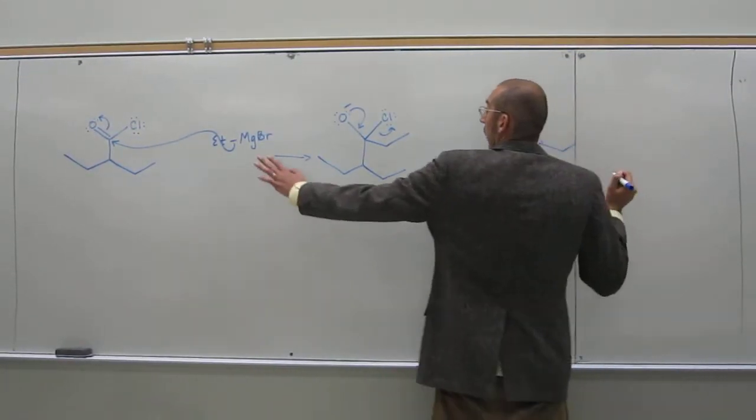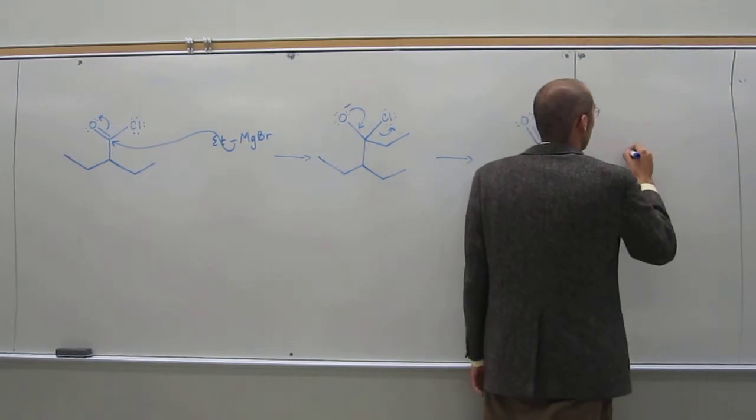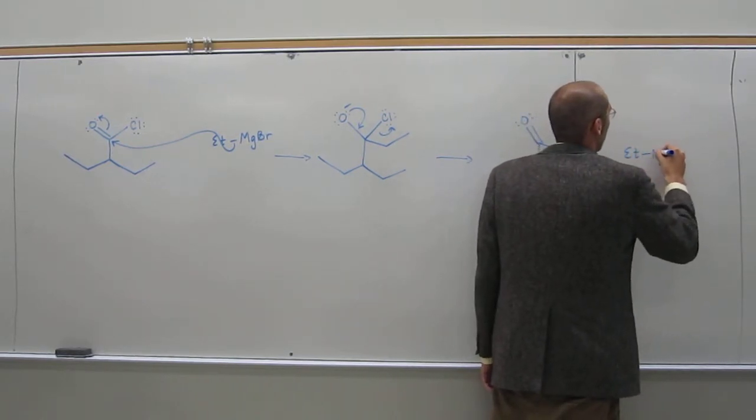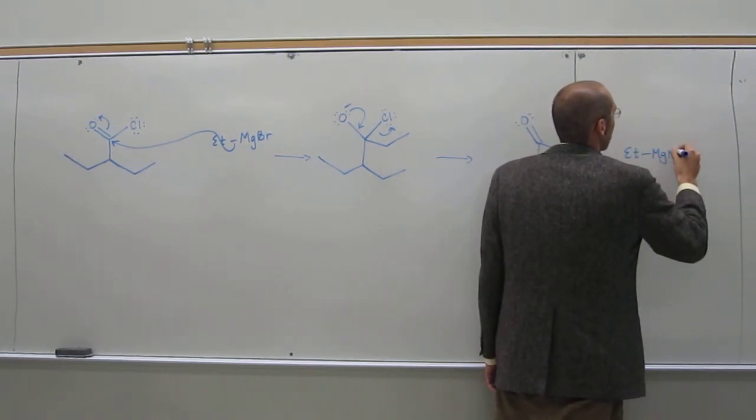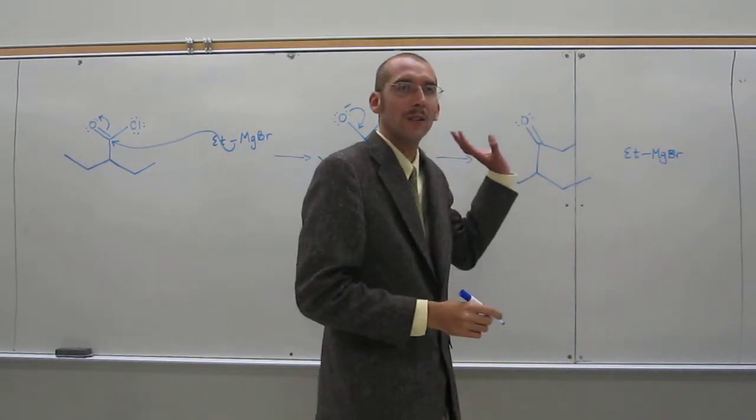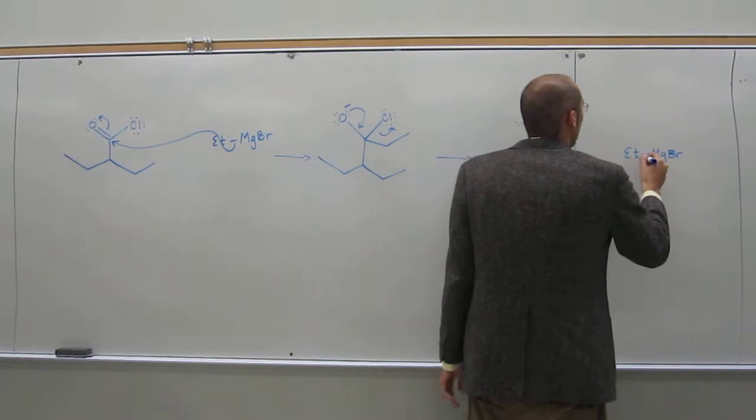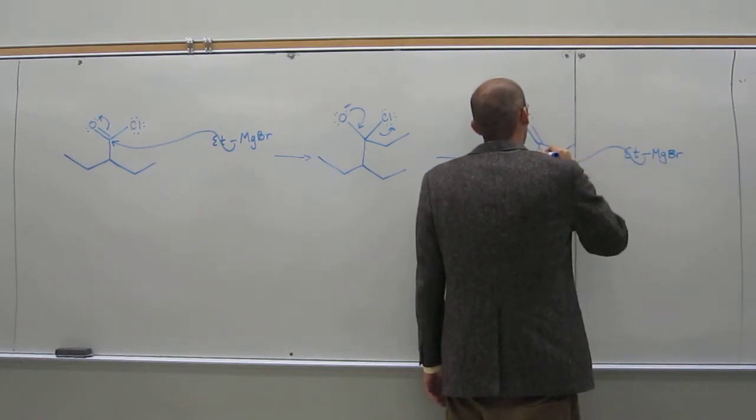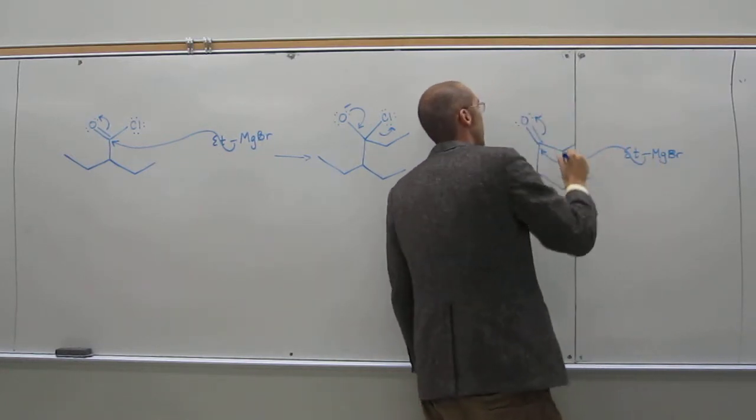Next thing that's going to happen, well, we've got excess of that ethyl magnesium bromide. So remember, when we react excess Grignard with an acid chloride, it goes to the tertiary alcohol, okay?